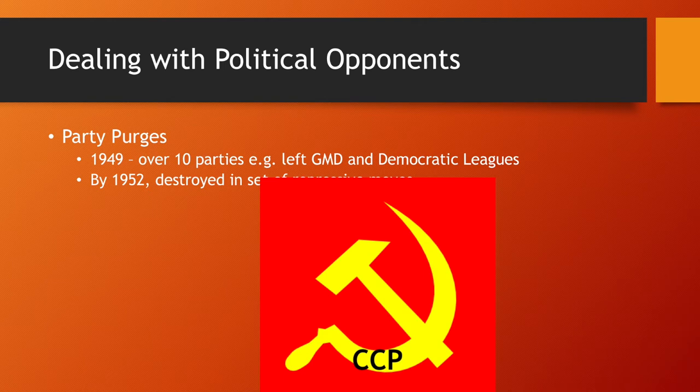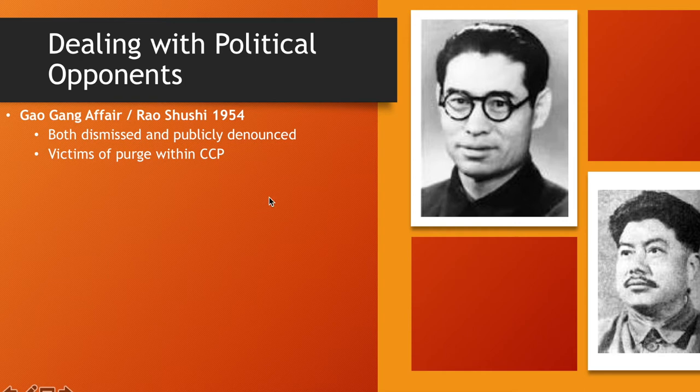They removed opponents whose ideology was in opposition to communism. Gaogang and Rao Shushi — in 1954, they were purged from the Communist Party itself, showing that even within the party you were not safe.